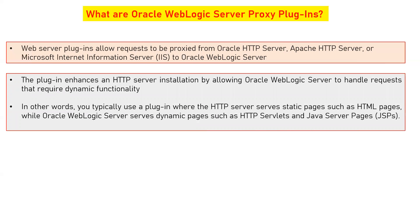The plugin enhances an HTTP server installation by allowing Oracle WebLogic server to handle requests that require dynamic functionality. We all know that web servers basically handle all the static requests — basic HTML pages along with videos, audios, or other HTML pages. Those are static content. But when you need to execute business functionalities and business logic, your application servers come into the picture, where applications are developed in Java or advanced Java, and that business logic is executed at the WebLogic server side. Your web server is not capable of handling such dynamic functionalities for the execution of business logic.